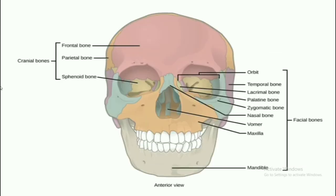Looking at the facial bones diagram: the lacrimal bone is on the side of the eyes — the bone inside the pinkish area. Just below the lacrimal is the palatine bone. The blue colored bone on the side of the eyes is the zygomatic bone. Zygomatic bones are two in number — one on each side.